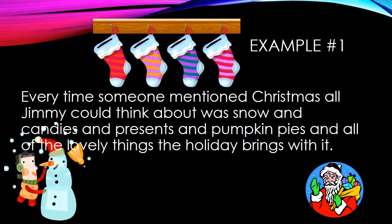My first example reads: every time someone mentioned Christmas, all Jimmy could think about was snow and candies and presents and pumpkin pies and all of the lovely things the holiday brings with it. So in this example, we know that there's polysyndeton because of the repeated use of the word and, the conjunction and. So instead of just listing all Jimmy could think about was snow, candies, presents, and pumpkin pies, it uses and repeatedly between each item.